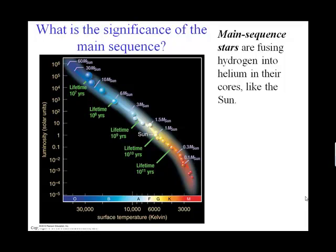And if a star is a main sequence star, then it's doing what our sun is doing with regard to producing energy. In the core of that star, then it must be fusing hydrogen into helium and creating energy. So main sequence stars are fusing hydrogen into helium in their cores.